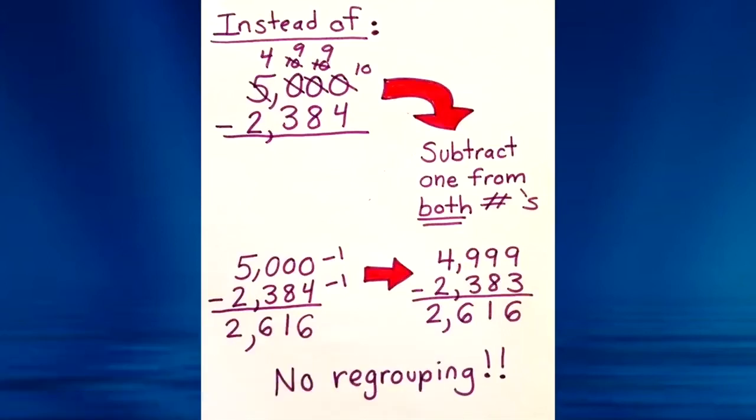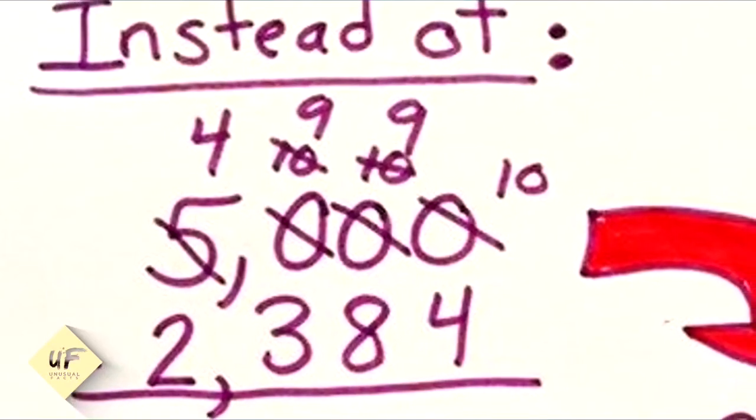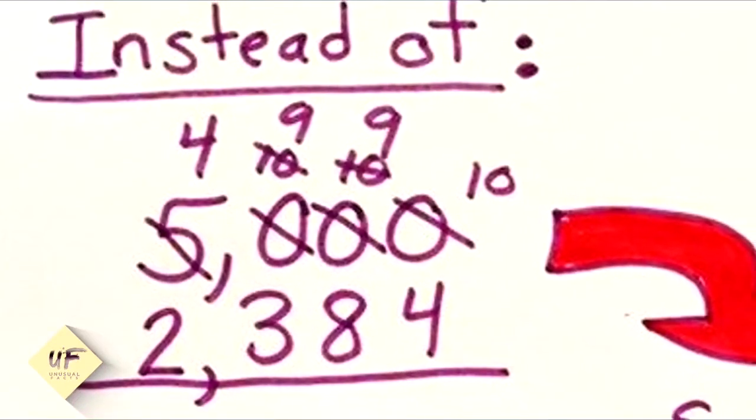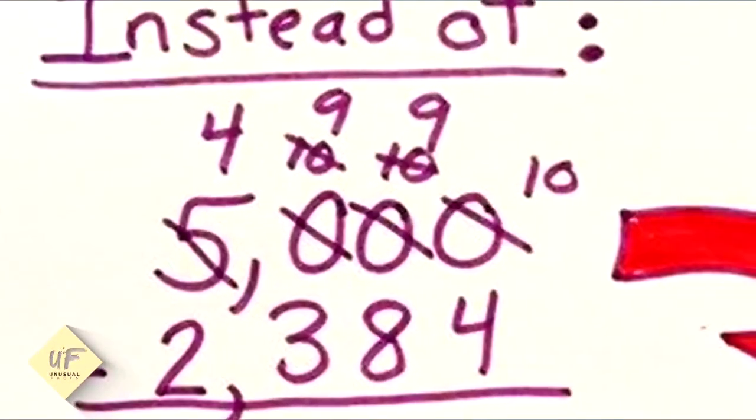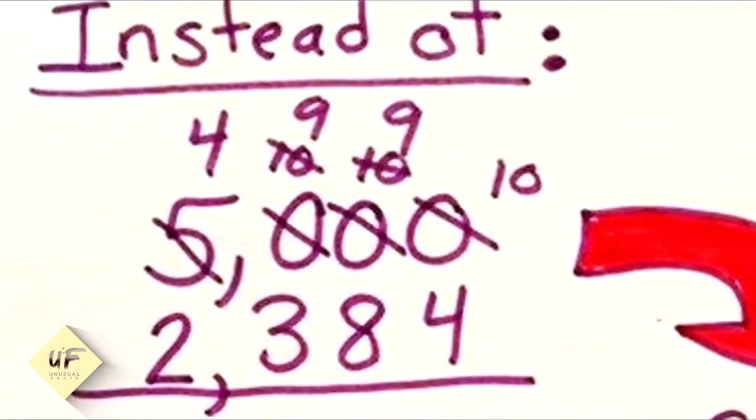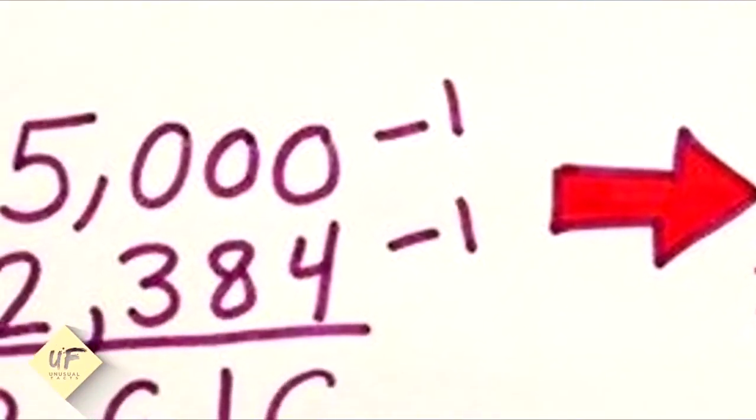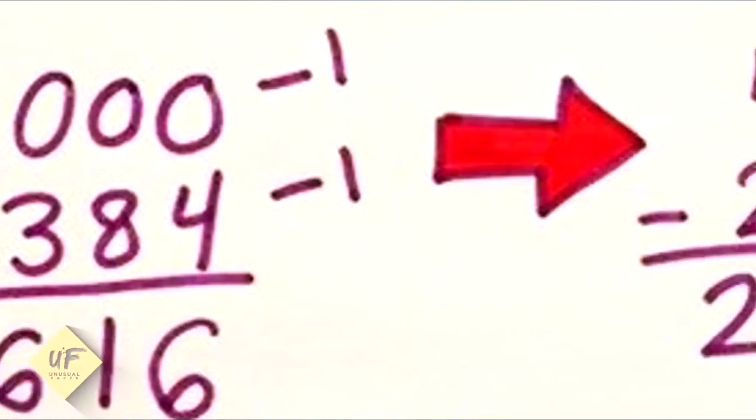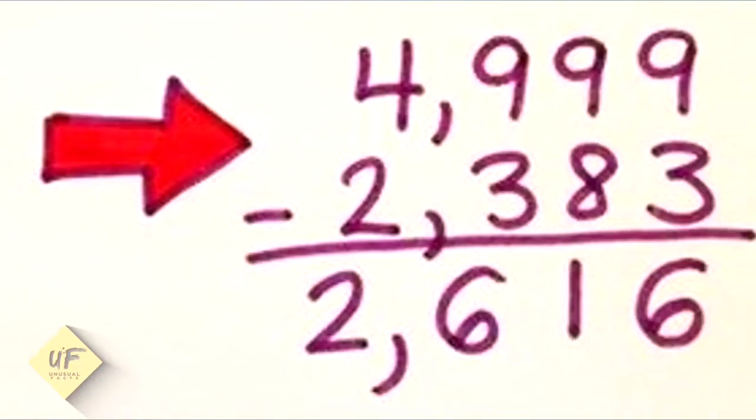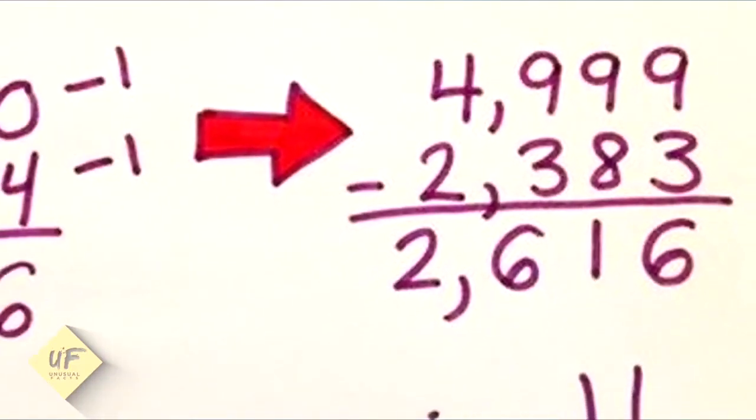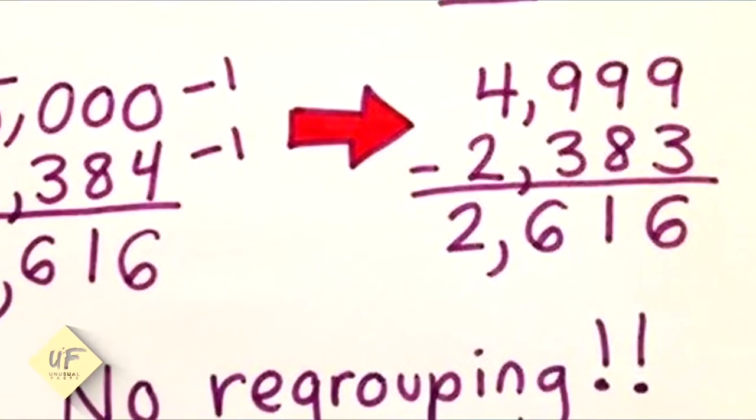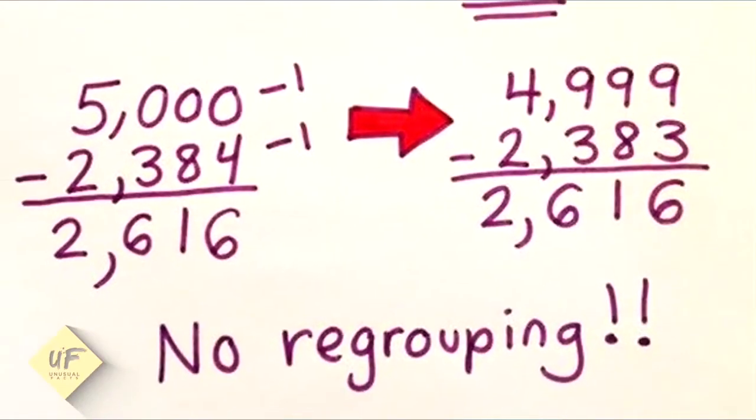To do subtraction with no regrouping, instead of doing 5,000 minus 2,384 with all the tens and nines and fours, breaking it down, you can subtract one from both numbers. So instead of 5,000 you have 4,999, and instead of 2,384 you have 2,383. Then you do your subtraction without any regrouping, and voila! A nifty trick to avoid regrouping in subtraction.